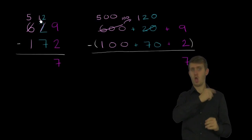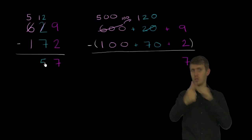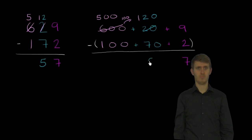But now we're ready to subtract. 12 tens minus 7 tens is 5 tens. Or you could say 120 minus 70 is 50.